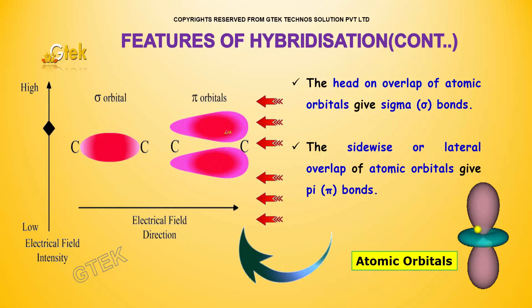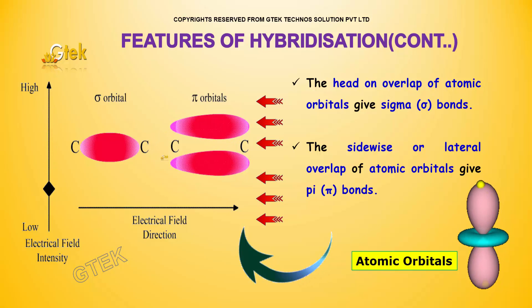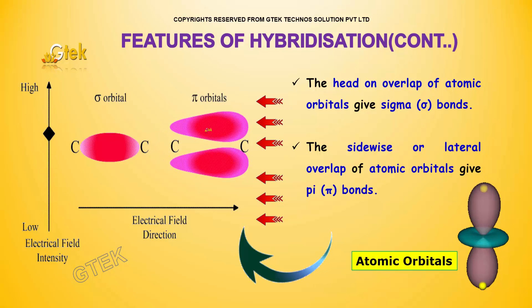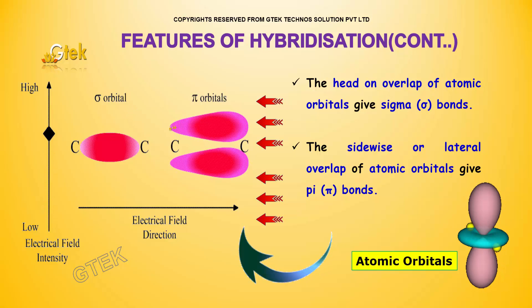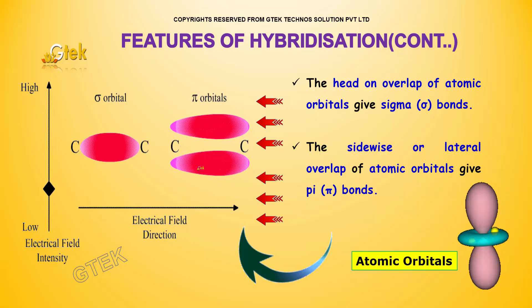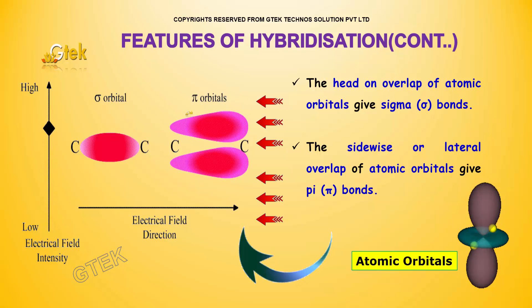The head-on overlap of atomic orbitals gives the sigma bond. The sidewise or lateral overlap of atomic orbitals will provide the pi bond.